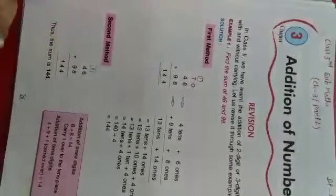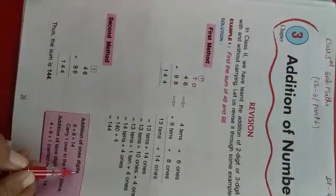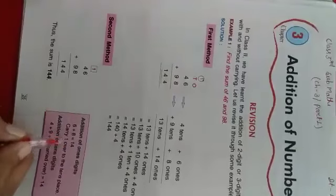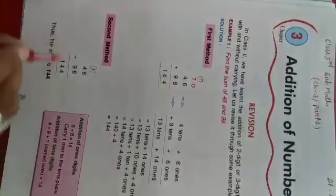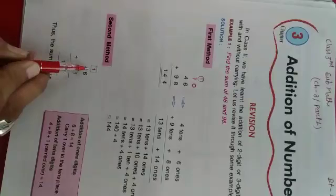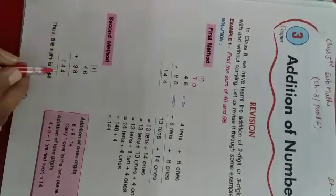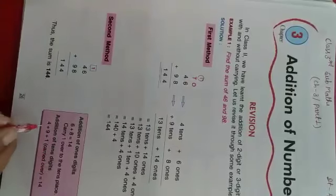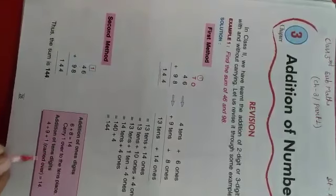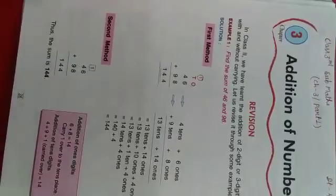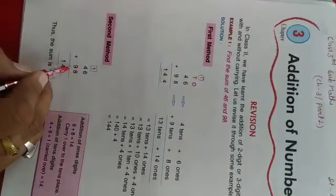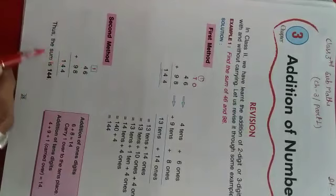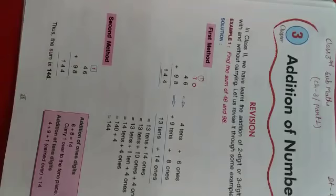Second method — addition of 1s digit: 6 + 8 = 14. Carry 1 over to the tens place. Write 4 below. Addition of tens digit: 4 + 9 + 1 (carried over) = 14. So 4 and 9 make 13, and 13 + 1 carry = 14. The sum is 144.